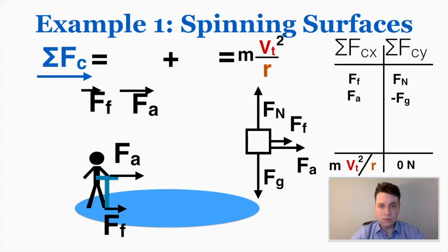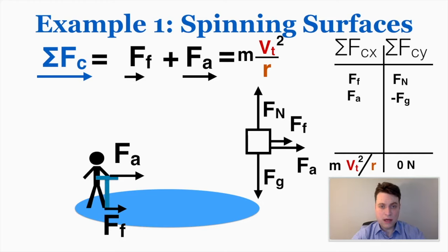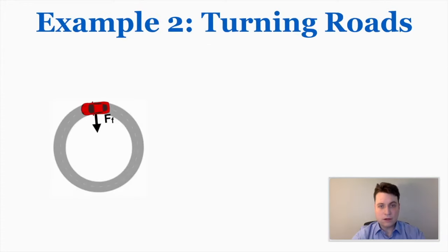This makes sense: if you're holding onto a bar as you're spinning in a circle, the applied force helps out the force of friction, and your feet have to do less work to keep you moving in a circle. So if you have both the force of friction and the applied force pointing toward the center, their sum equals mv squared over r, and you can get additional information — for example, if you know the centripetal force and the applied force, you can calculate the force of friction.